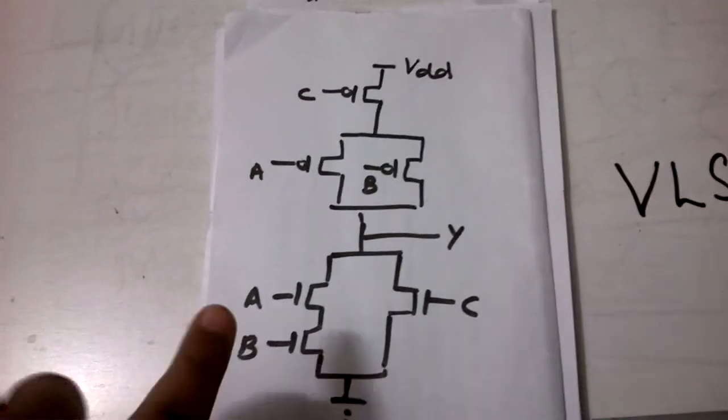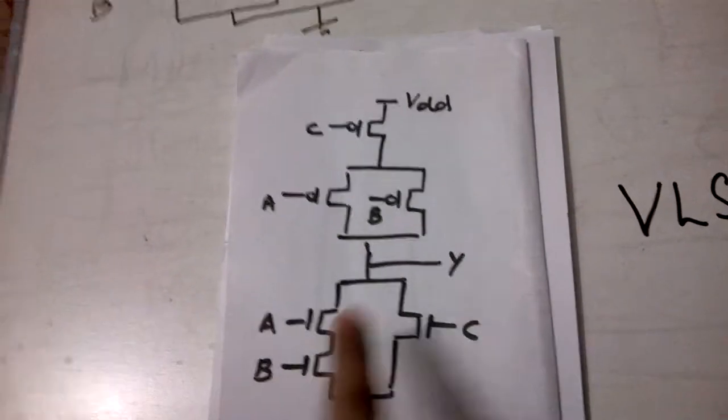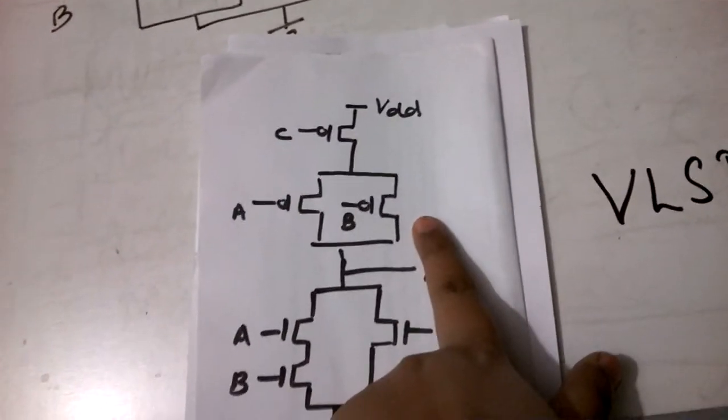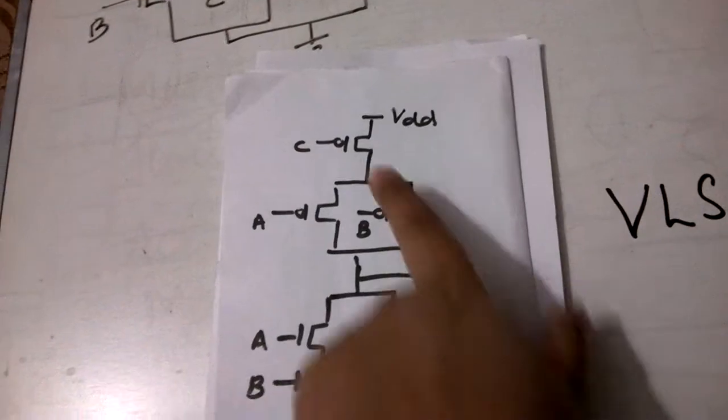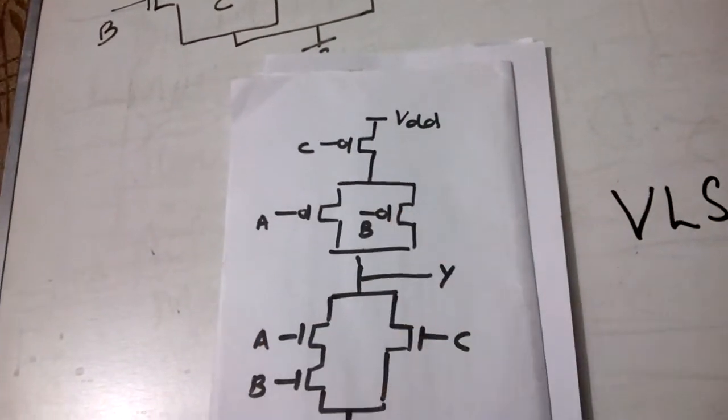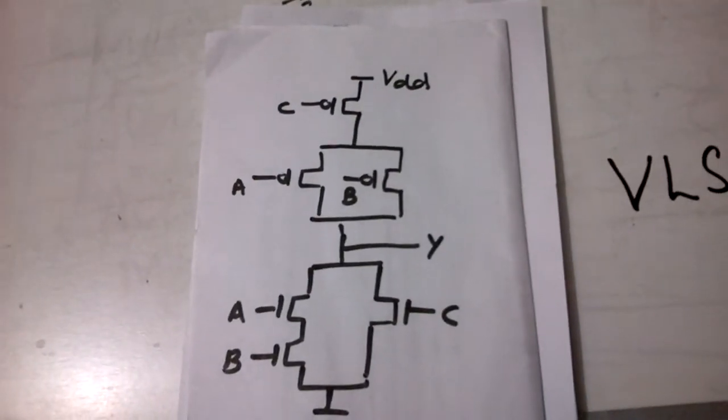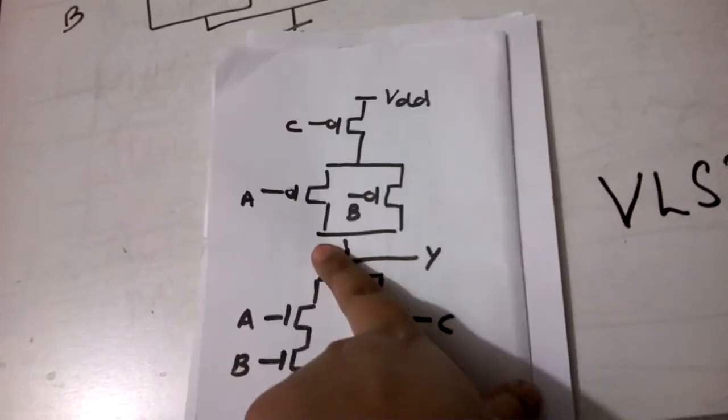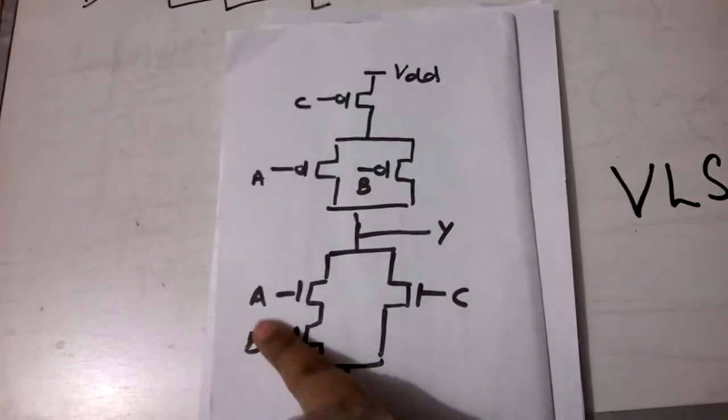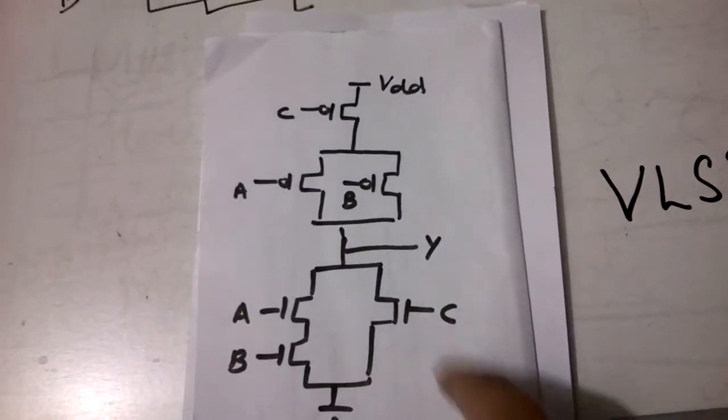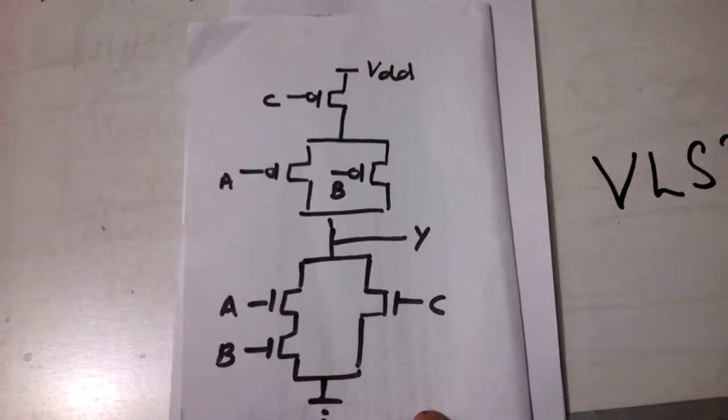Here a and b were in series but now a and b are in parallel. C was in parallel here and now c is in series with the combination of both a and b. So the above three devices are the PMOS devices and these are your NMOS devices. This is a CMOS structure for the given expression for y.